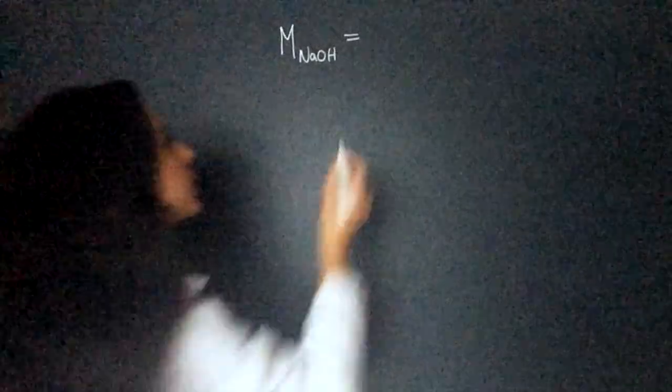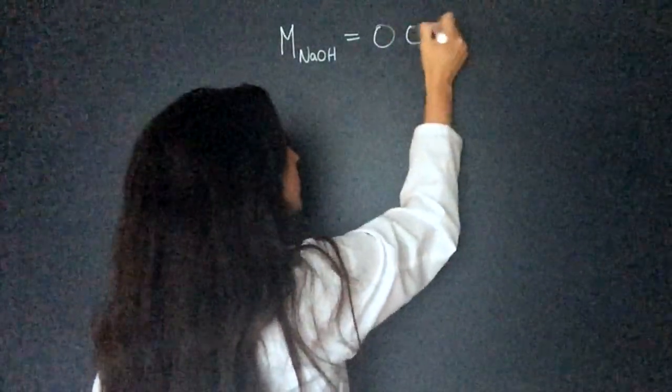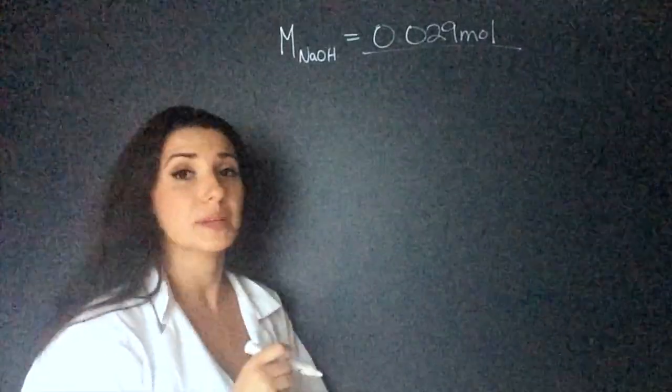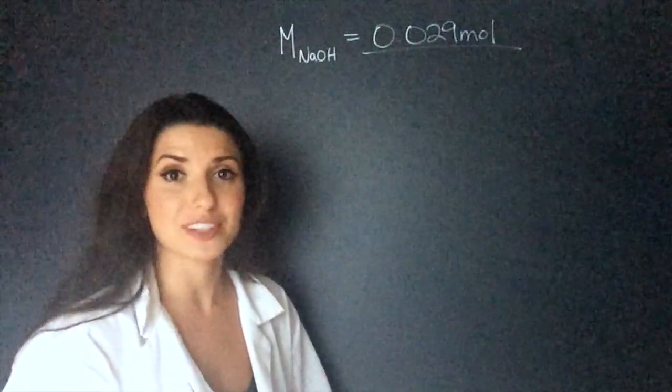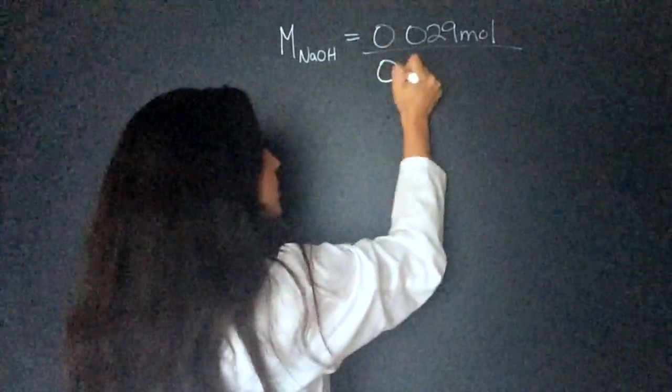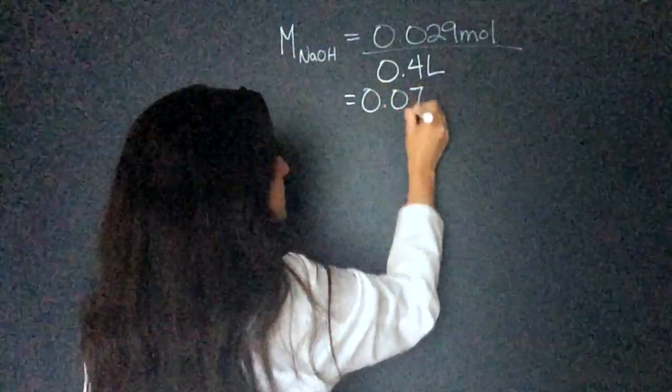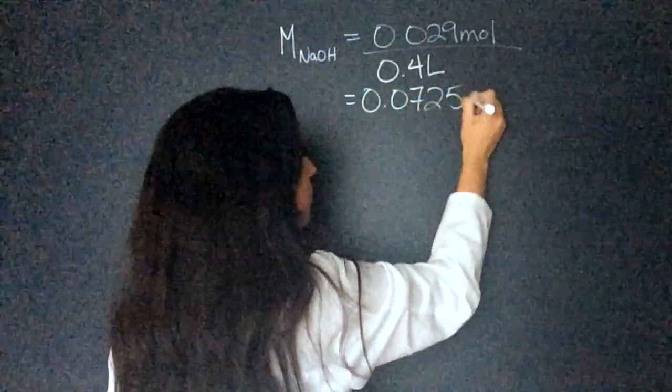So let's find the molarity of sodium hydroxide. So we were given 0.029 moles and 400 milliliters, but remember we have to convert that to liters. So that's going to be 0.4 liters. That gives us 0.0725 moles per liter.